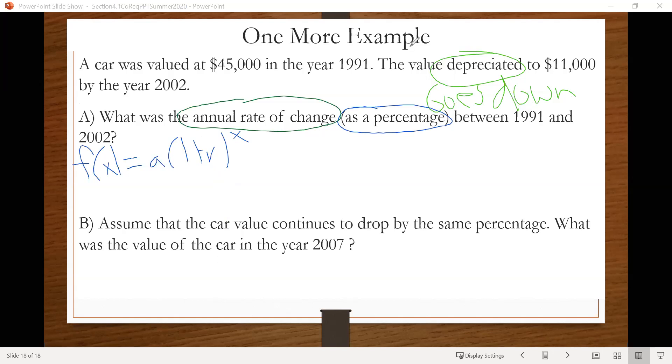So we start with, we're told that in 1991 the value of the car was $45,000. So that would be our starting value. So that will go in for A. So the value depreciated to $11,000. So that's the value it became. So that would actually be our output. So I'm going to slide this over so everything fits. So we're going to have $11,000 equals $45,000 times 1 plus, well, we're looking for R, so we don't have any values for that.